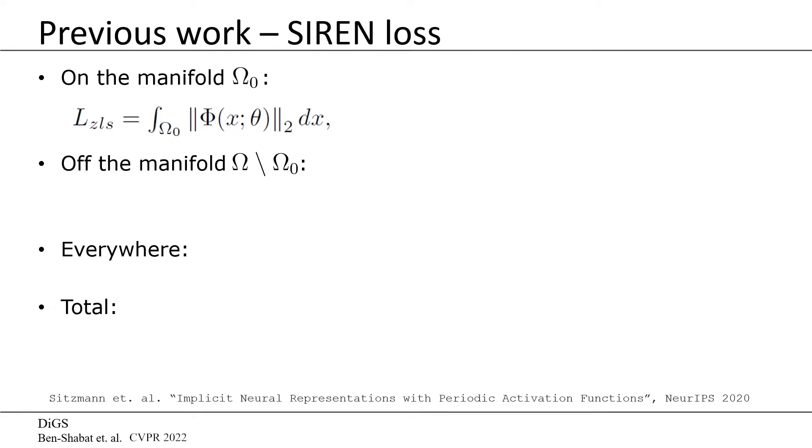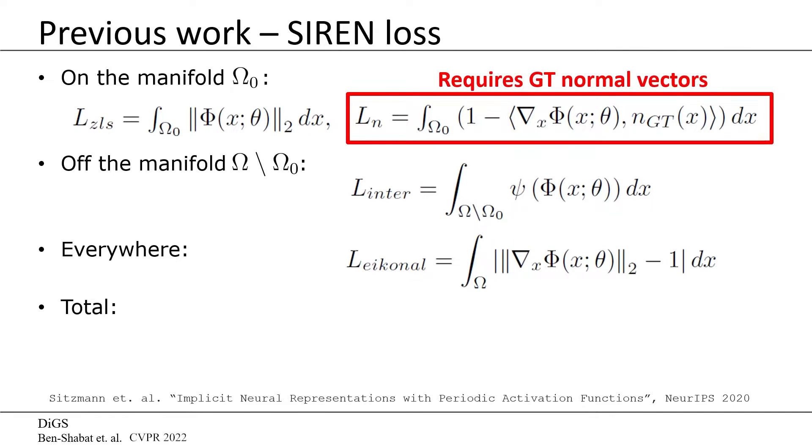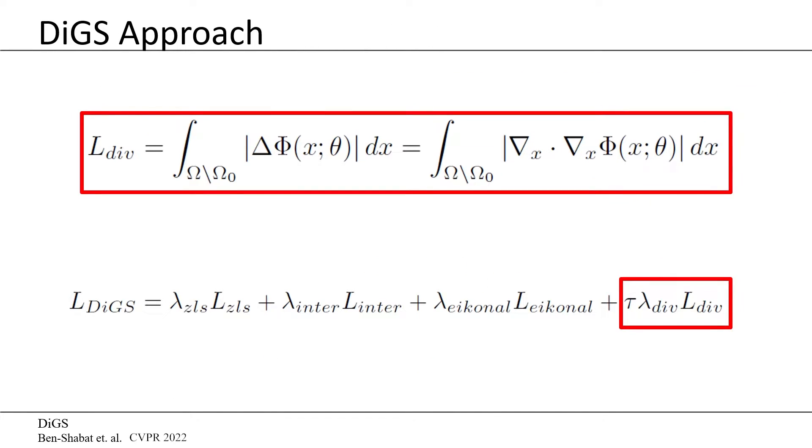The original SIREN loss function includes a zero-level set term pushing points on the surface to have zero value, an inter-term which penalizes points close to the surface for getting low values, an eikonal term pushing the gradients everywhere to have unit length, and a normal term which pushes the gradient direction to match the normal direction for points on the surface. We propose to replace the normal term with the Laplacian term which pushes the divergence of the gradient vector field to be low off the surface and does not require ground truth normals to train.